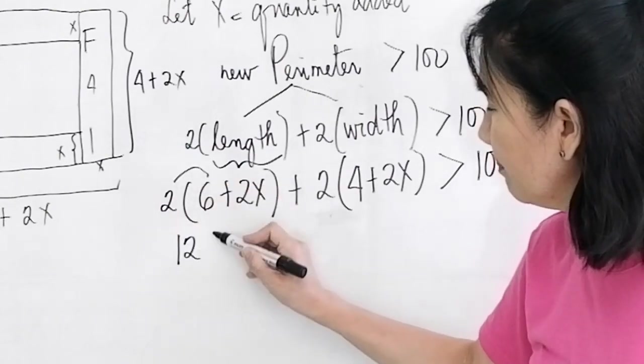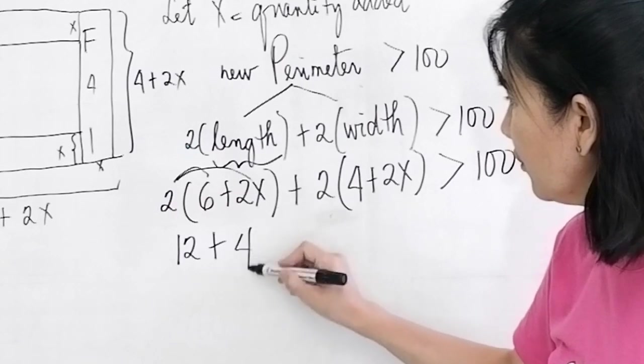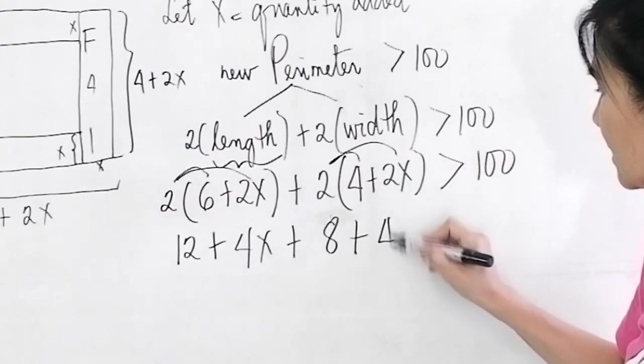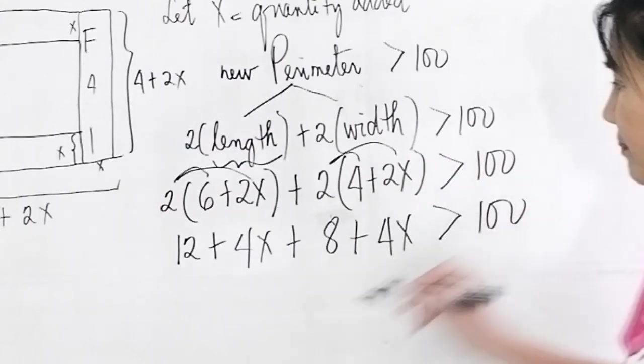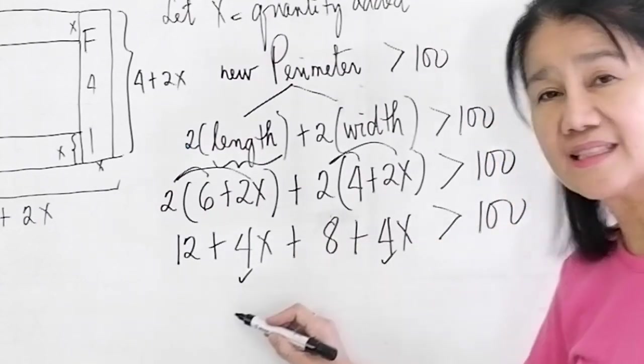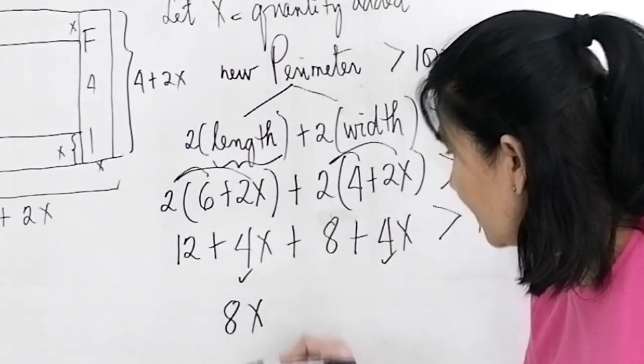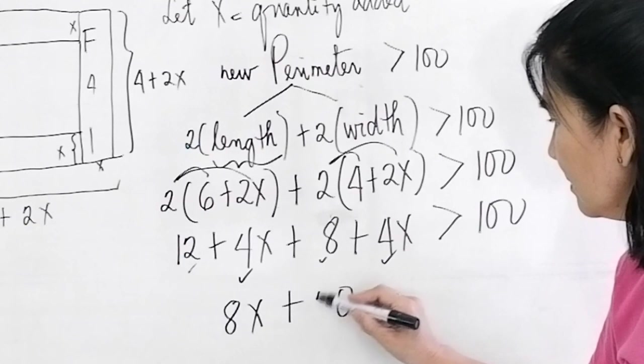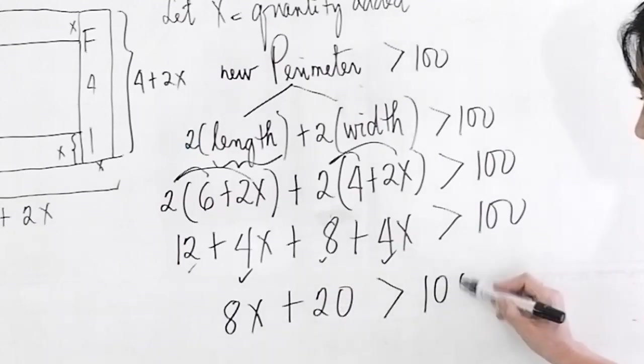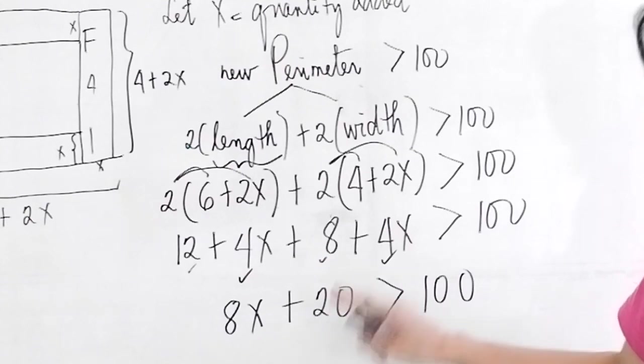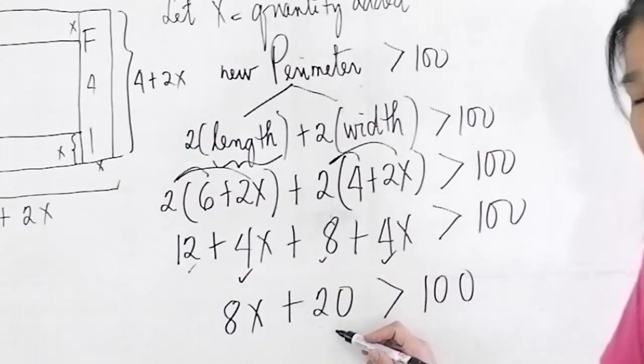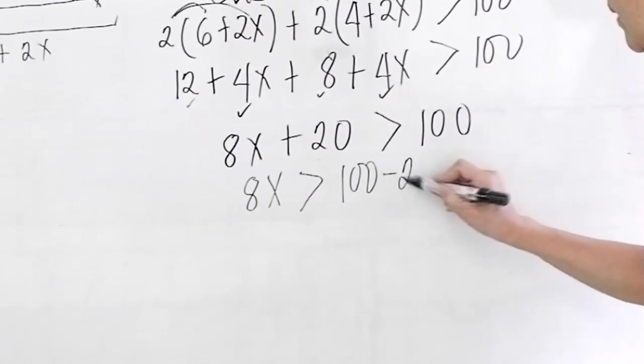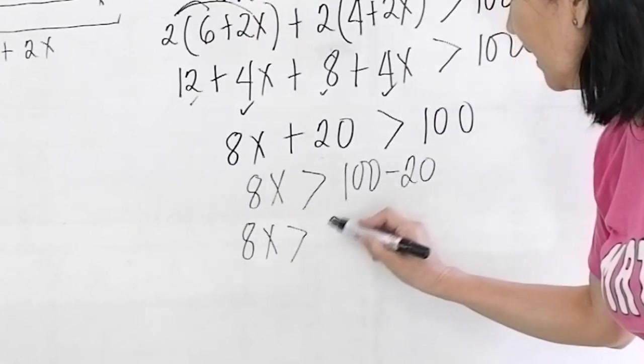We now simplify: 2 times 6 is 12 plus 2 times 2x is 4x plus 2 times 4 is 8 plus 2 times 2x is 4x is greater than 100. Combine all x's: 4x plus 4x is 8x. Combine all the constants, so 12 plus 8 is 20, greater than 100. What can you do to this? You transpose this to the other side, so 8x is greater than 100 minus 20, which is 80.